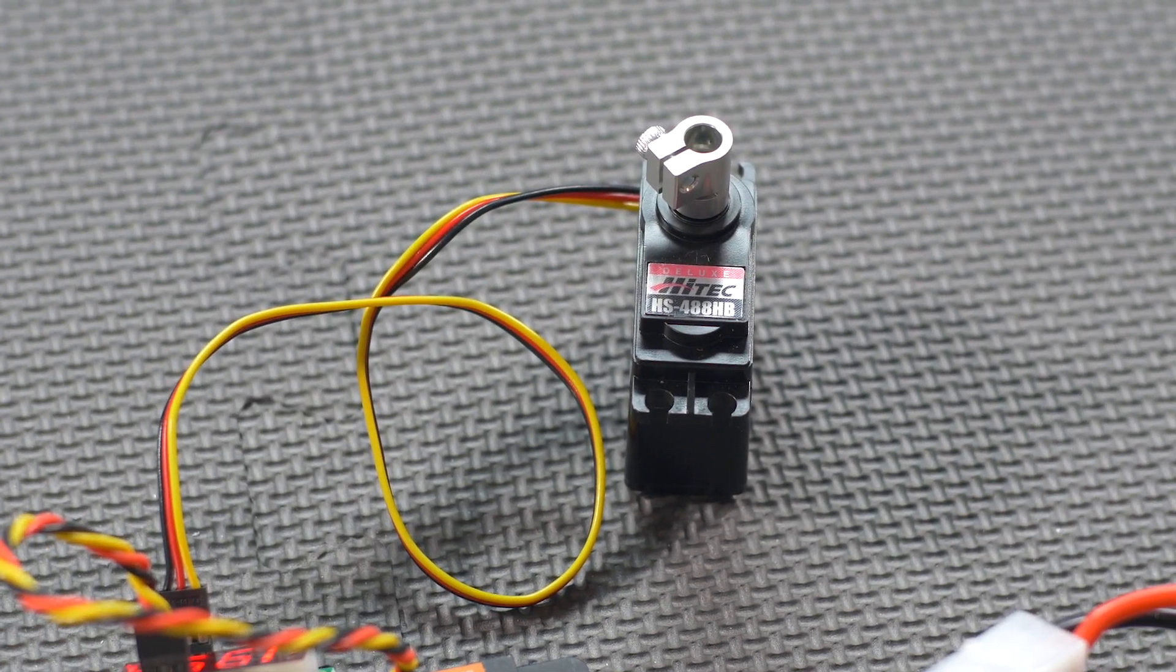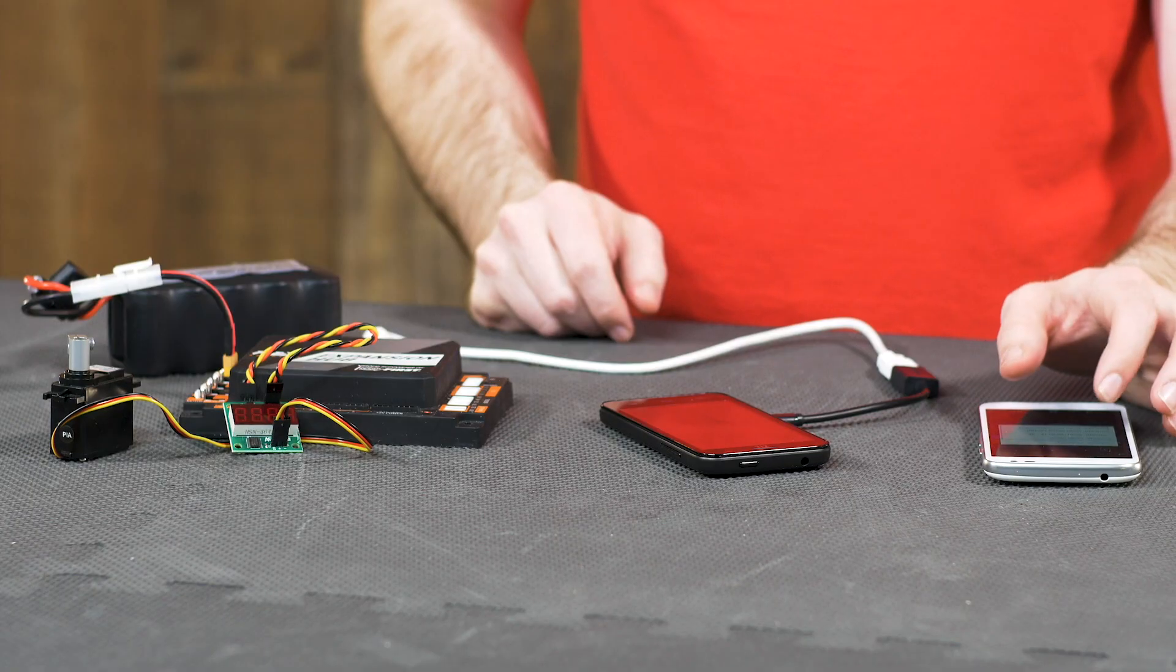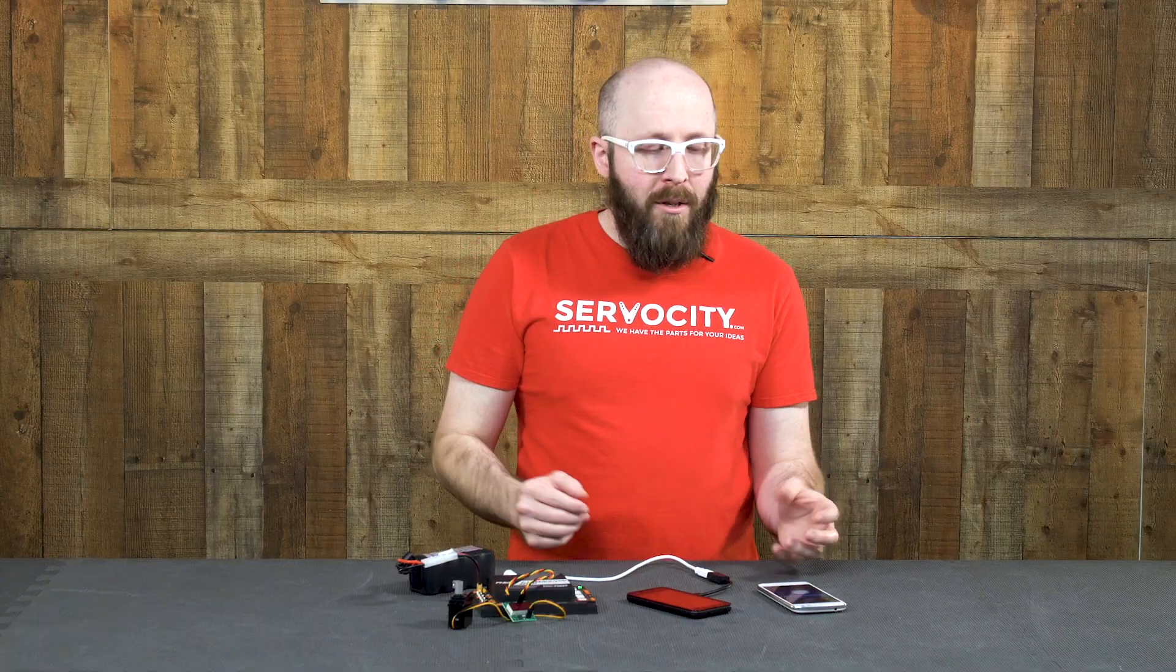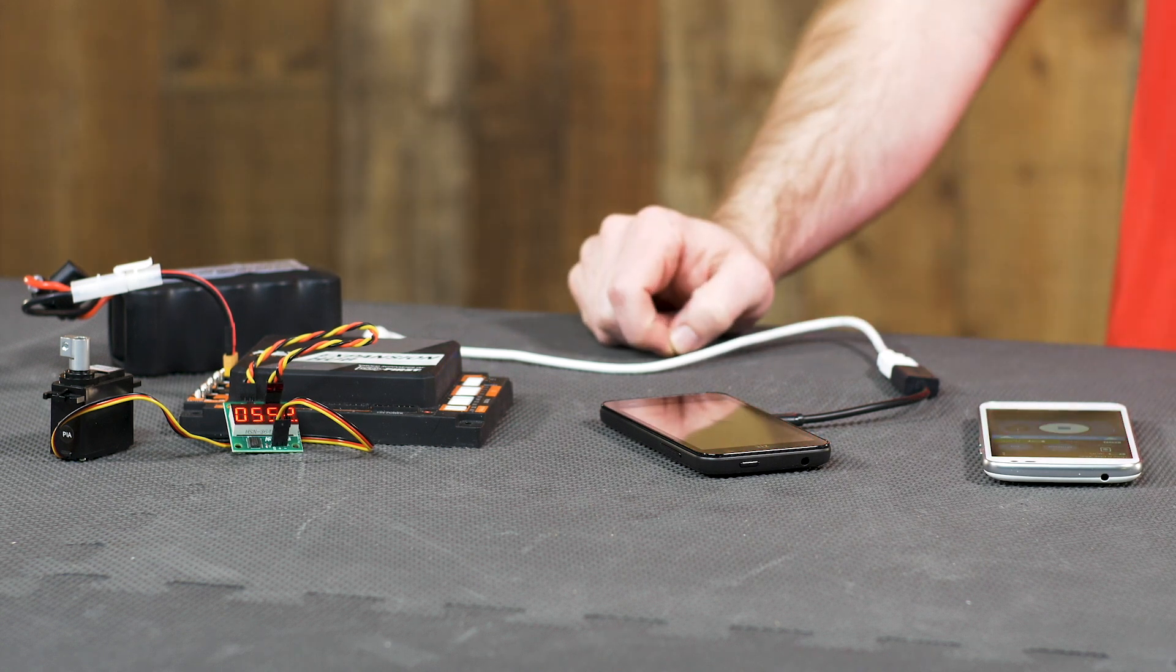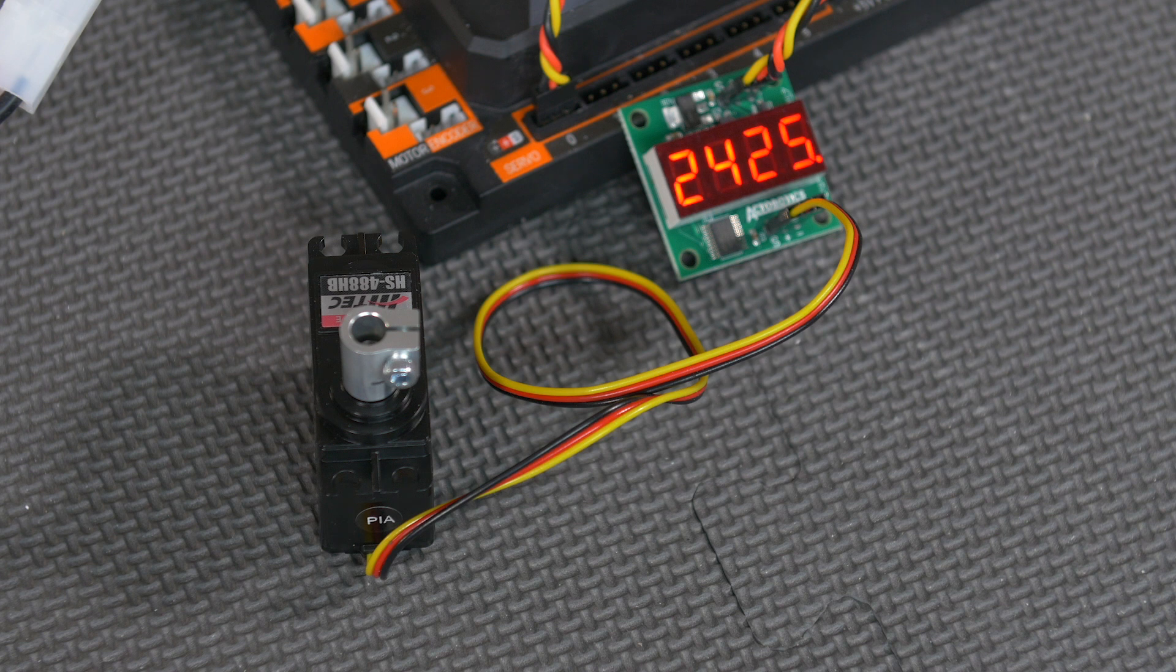So next, I'm going to be sending its maximum PWM range as specified on the servo page, which happens to be 553 to 2425 microseconds.